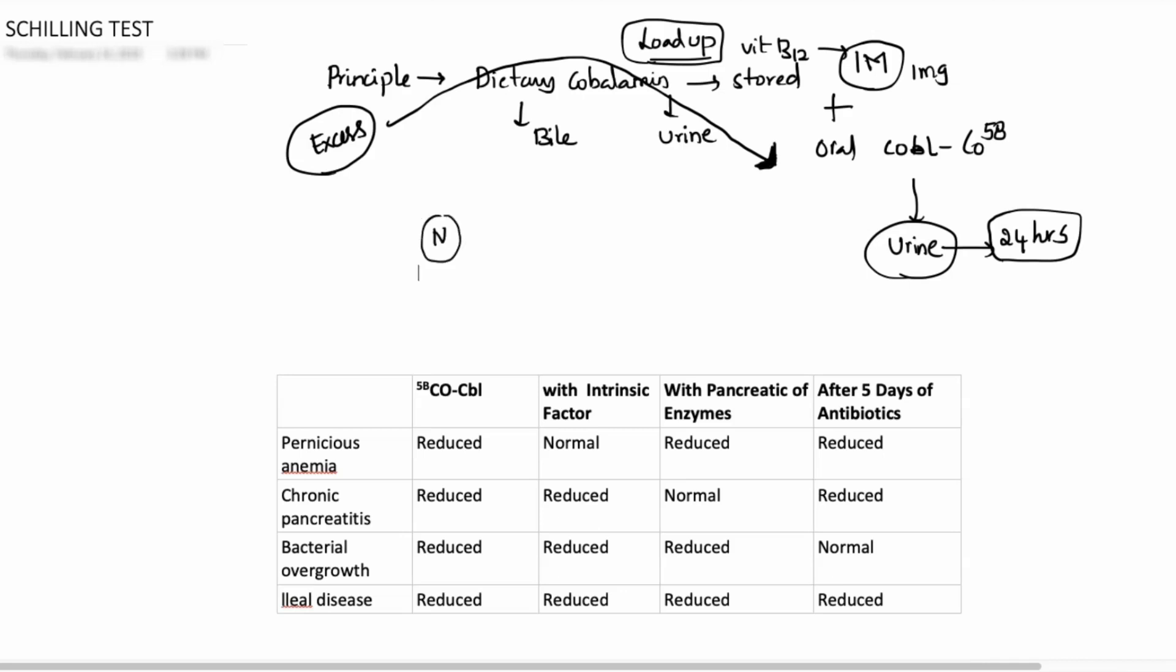Normally, in the excretion part, you will see around more than 10% of excretion of cobalamin. Why is it getting excreted? Because it is getting absorbed. That is the reason it is getting excreted into the urine. If there is any absorptive defect, you will not see more than 10% excretion. You will see less than 10%, so less than 10% excretion in 24 hour urine sample is abnormal.